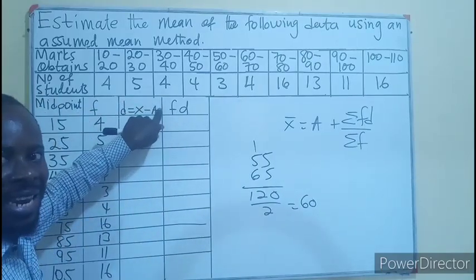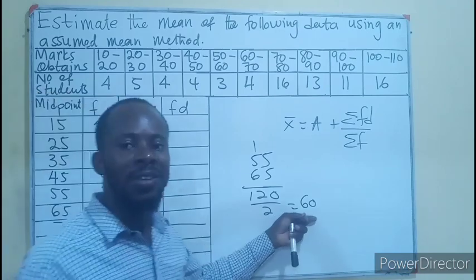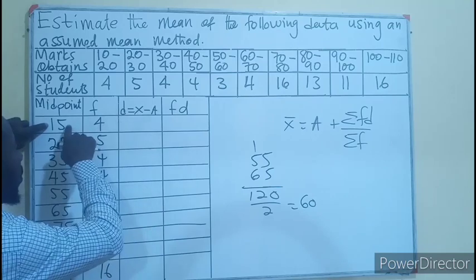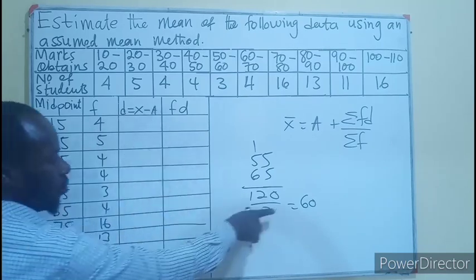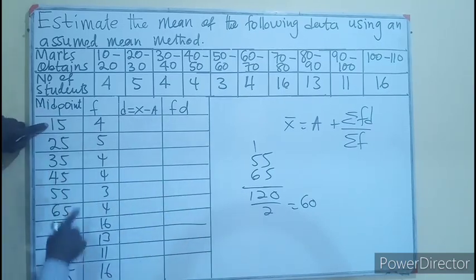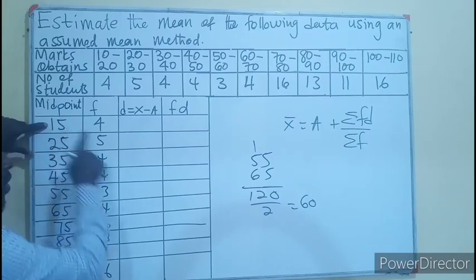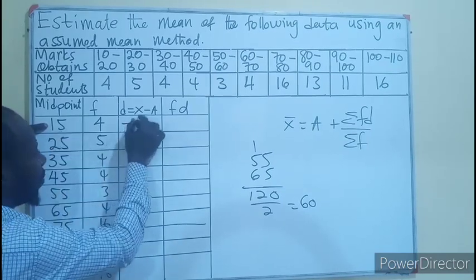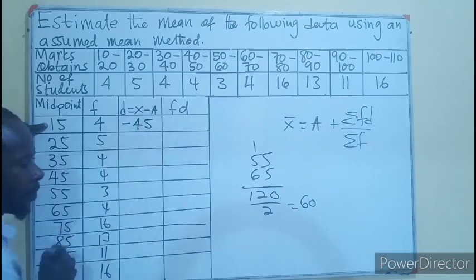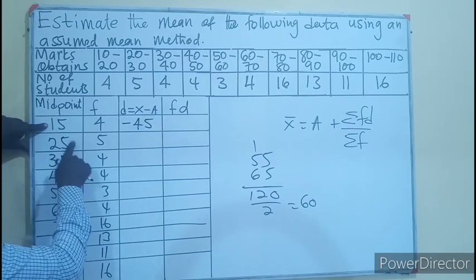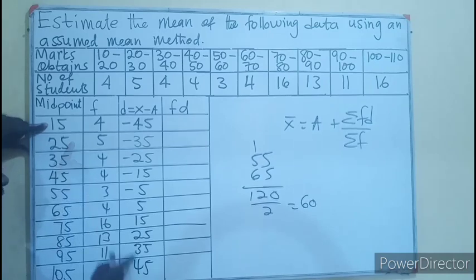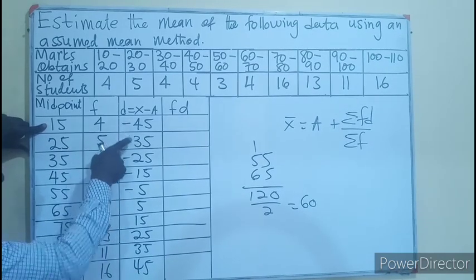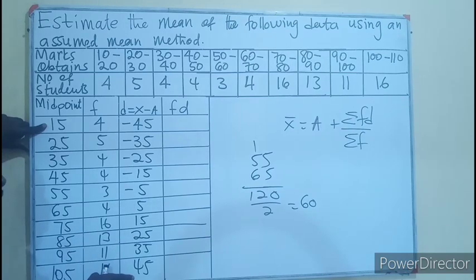Now it will be x value minus the mean, that's your assumed mean which is 60. So in this case if we subtract 60 from 15, you'll be having negative 45. Then you subtract 60 from each value. You can see the pattern that the positive numbers climbing up are the same with the negative numbers in terms of figures.